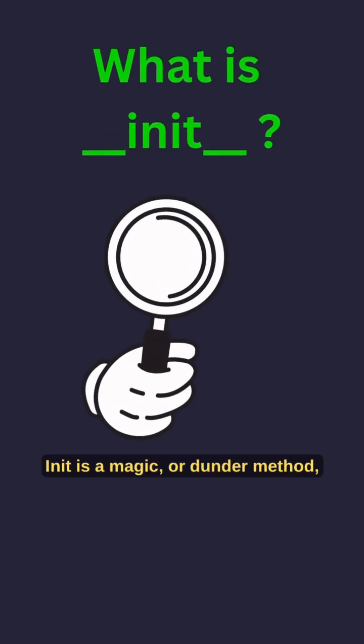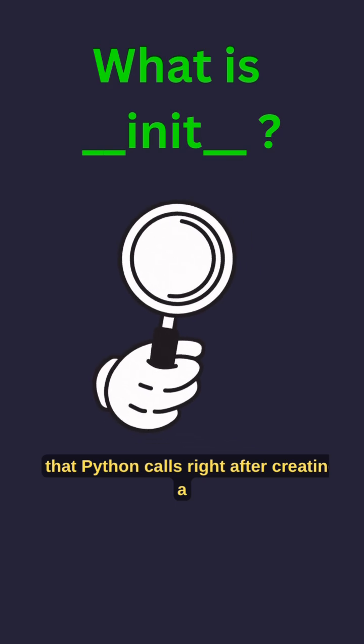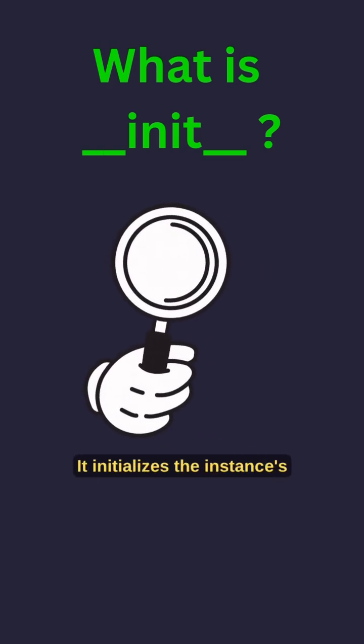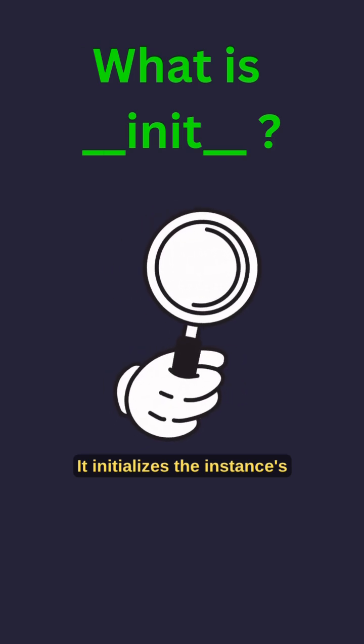Init is a magic or Dunder method that Python calls right after creating a new object. It initializes the instance's state.